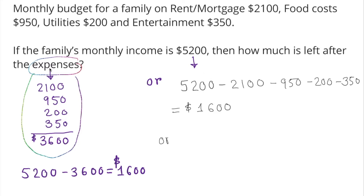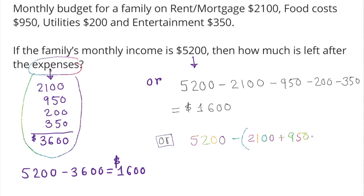Or we can do it yet another way: 5200 minus, with parentheses, 2100 plus 950 plus 200 plus 350. That would also give us $1600.